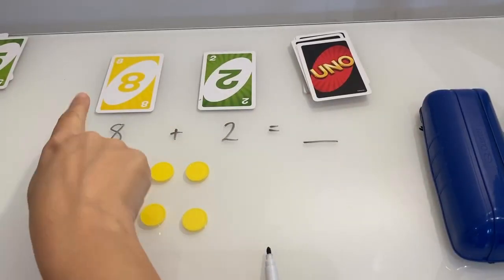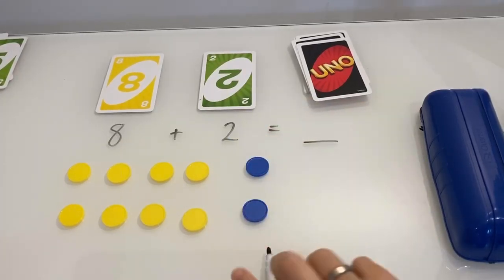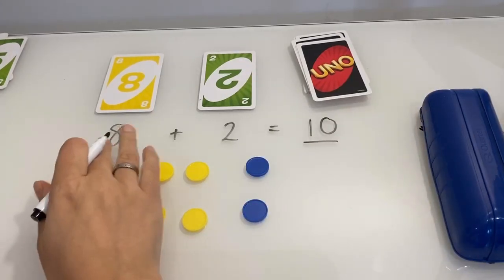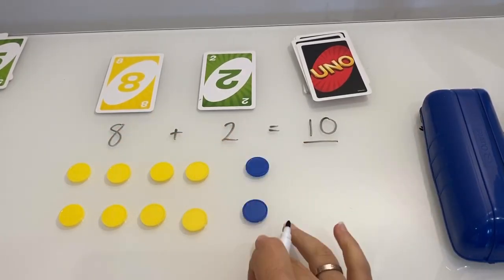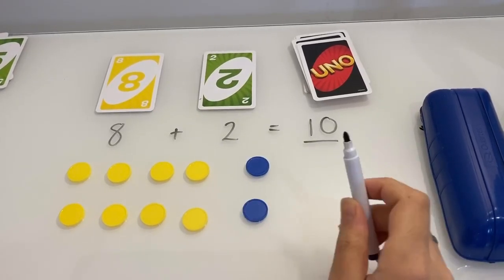So eight is our biggest number. Eight, nine, ten. Eight plus two, eight plus two is ten.